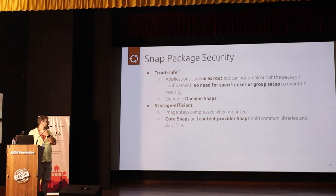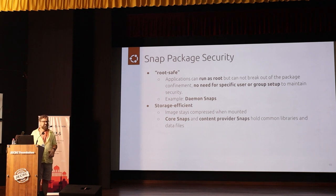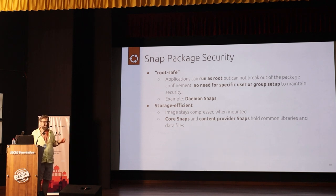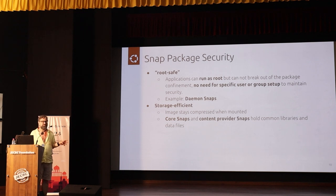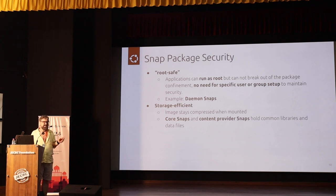To save on resources, we have core snaps with the most common libraries, so snaps do not need to bring those themselves. For library-heavy situations like GNOME or KDE applications, we have so-called content snaps — snaps with collections of libraries. For GNOME and KDE we have content snaps with all the libraries, icons, and fonts that GNOME and KDE need, so those applications share this snap and become much smaller.